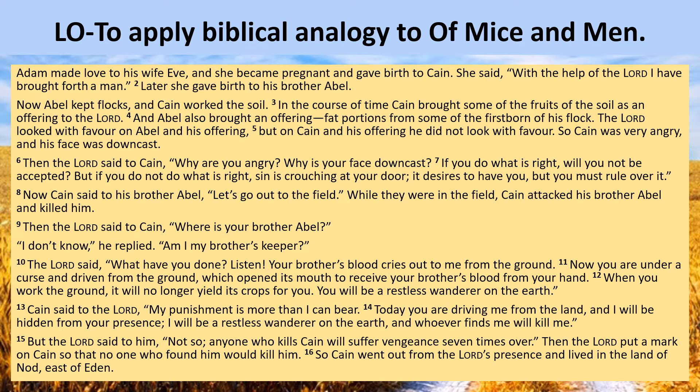Adam made love to his wife Eve, and she became pregnant and gave birth to Cain. She said, 'With the help of the Lord, I have brought forth a man.' Later, she gave birth to his brother Abel. Abel kept flocks and Cain worked the soil. Cain brought some of the fruits of the soil as an offering to the Lord, and Abel also brought an offering — fat portions from some of the firstborn of his flock. The Lord looked with favour on Abel and his offering, but on Cain and his offering he did not look with favour, so Cain was very angry and his face was downcast. They're both farmers — Cain works the soil, Abel keeps animals — and God looks more favourably on raising livestock than on raising crops, and for this reason Cain gets very angry.